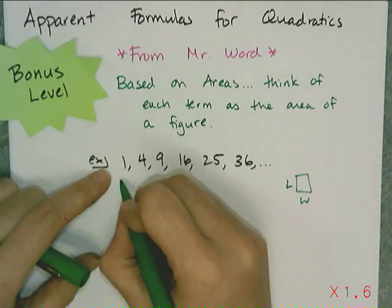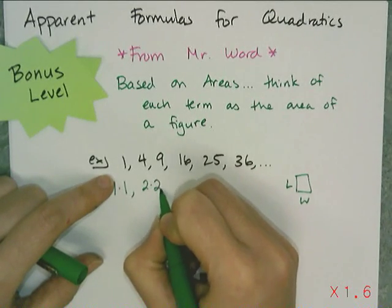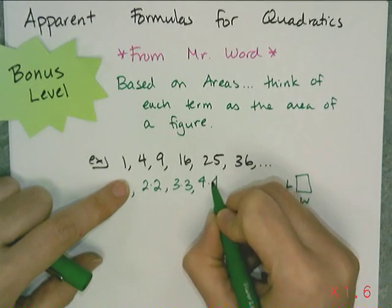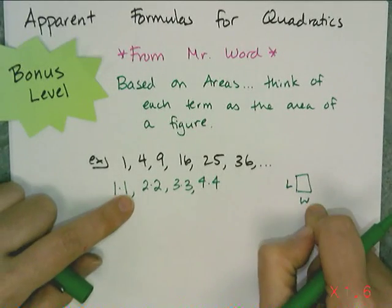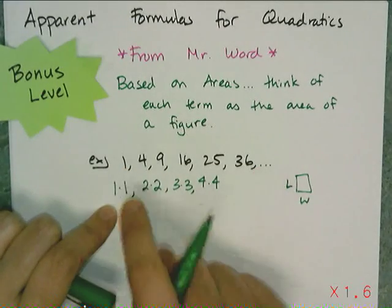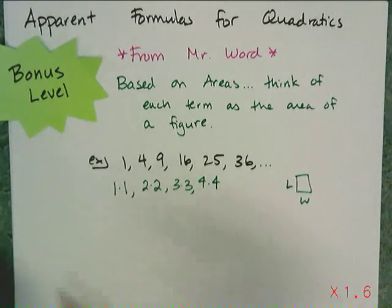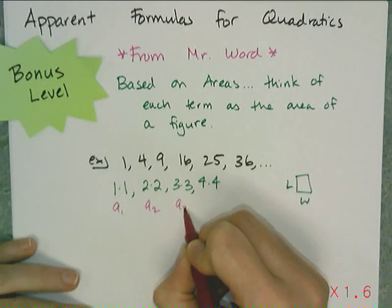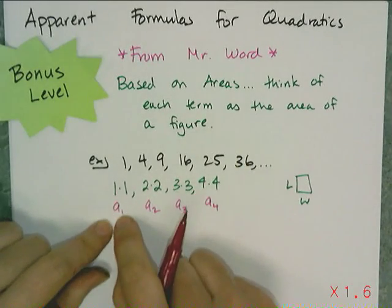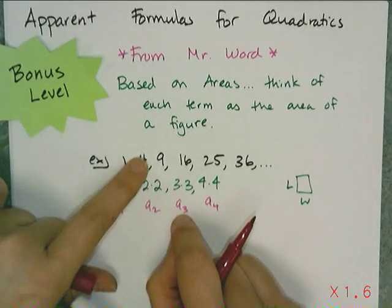So for the first one, 1 is a 1-by-1 square; 4 is a 2-by-2 square; 9 is a 3-by-3 square; 16 is a 4-by-4 square. So the length is 1 and the width is 1, the length is 2 and the width is 2. Instead of a pattern in these numbers, I look for patterns in the factors, and I see if there's a way to relate the term number — a sub 1, a sub 2, a sub 3, a sub 4 — with the factors. That number squared is that number, and so on.